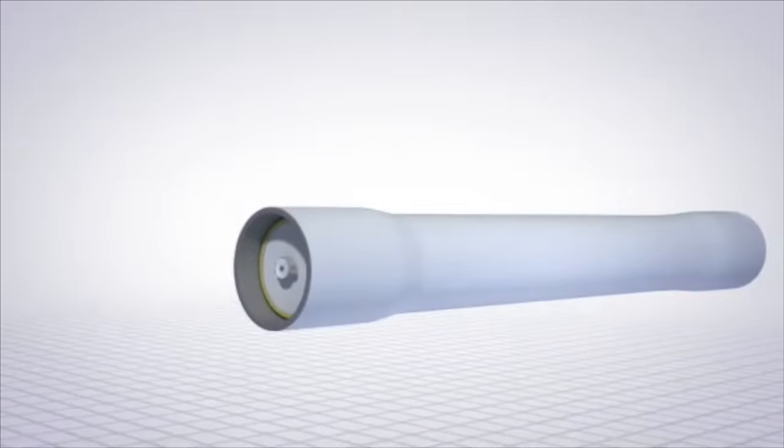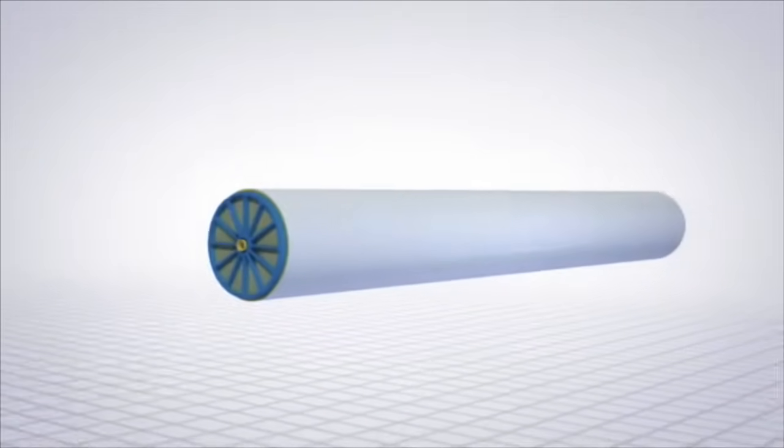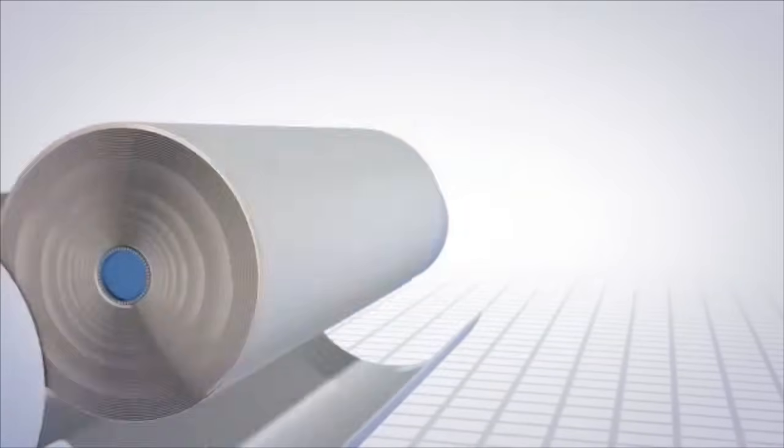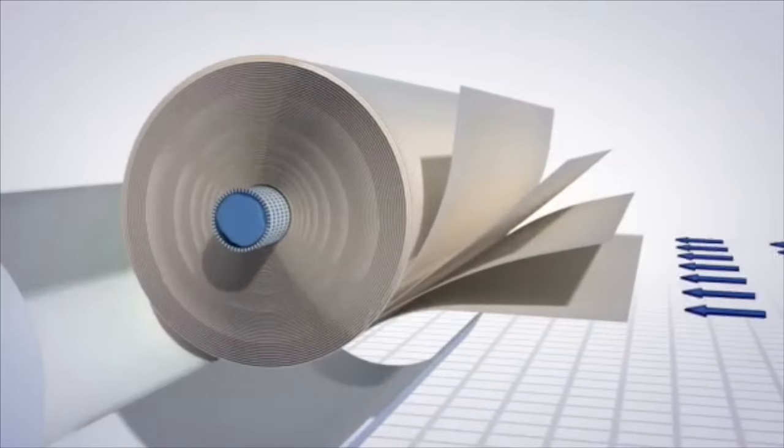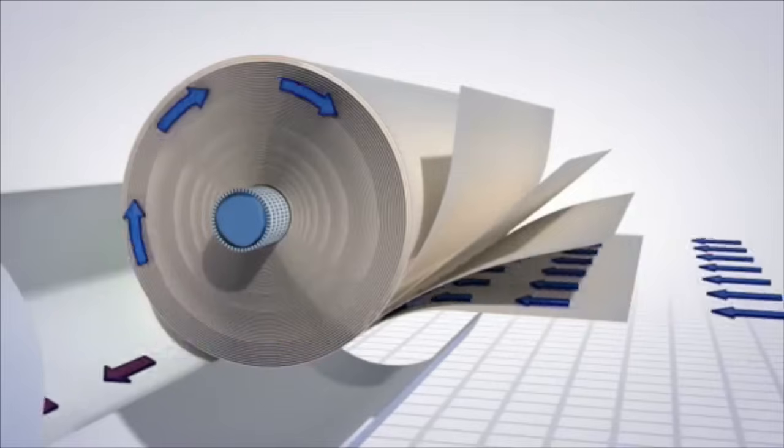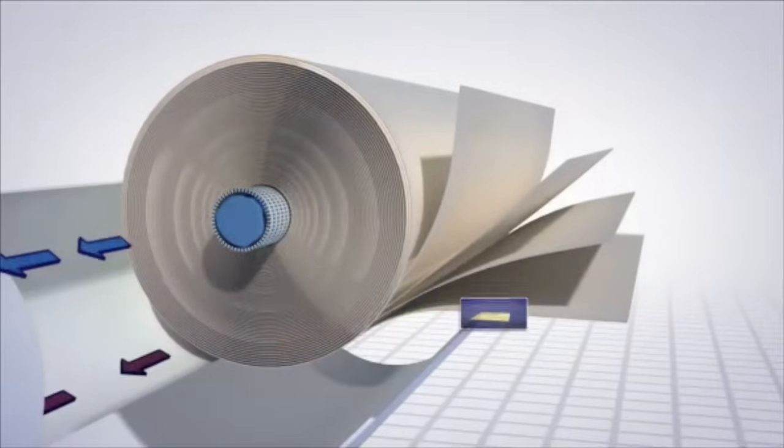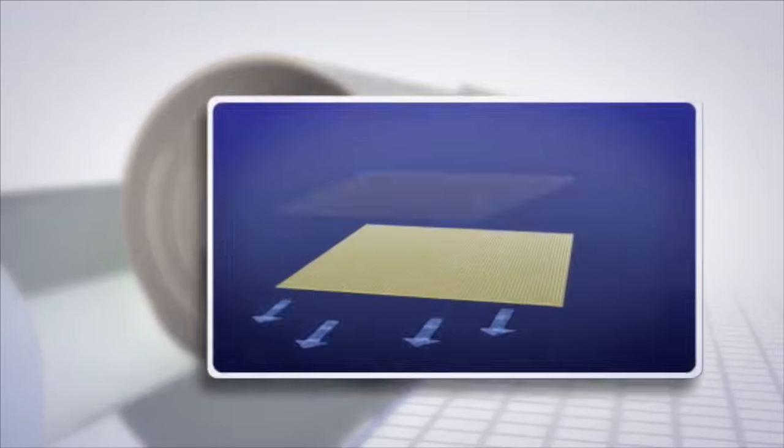Rolls of membrane sheets are wound into cylinder shaped elements. There are several elements inside each long pressure vessel. As water enters the vessel, it flows over the membrane surface as it moves from one end of the vessel to the other.